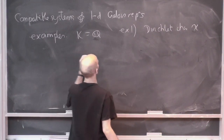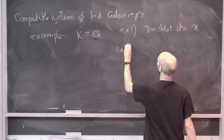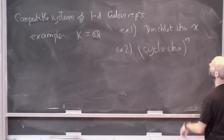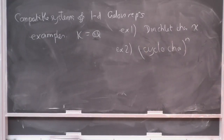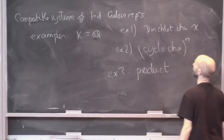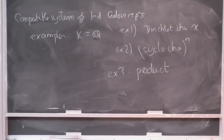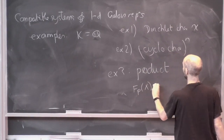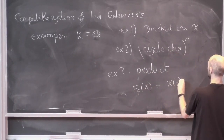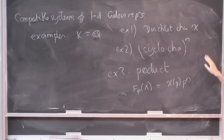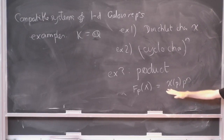That's a bit of a lame example. More interesting: example two, the cyclotomic character to the power n. And you can multiply them together — example three, take a product. You get f_p(x) is just chi(p) times p to the n, right? For every l-adic representation, l not p, Frobenius of p goes to chi(p) times p to the n, and that's independent of l.